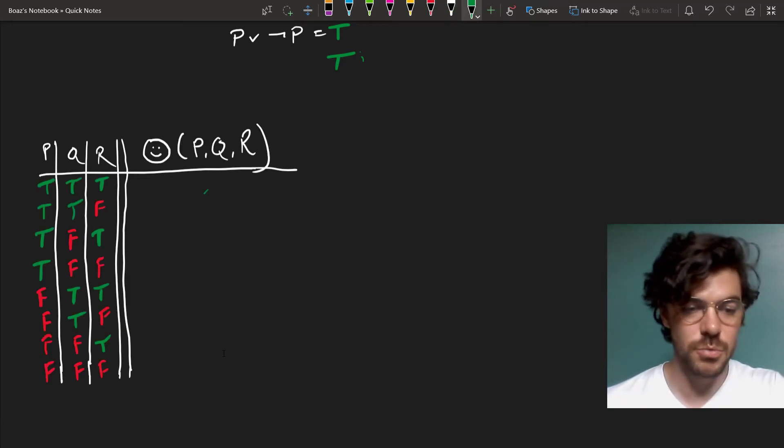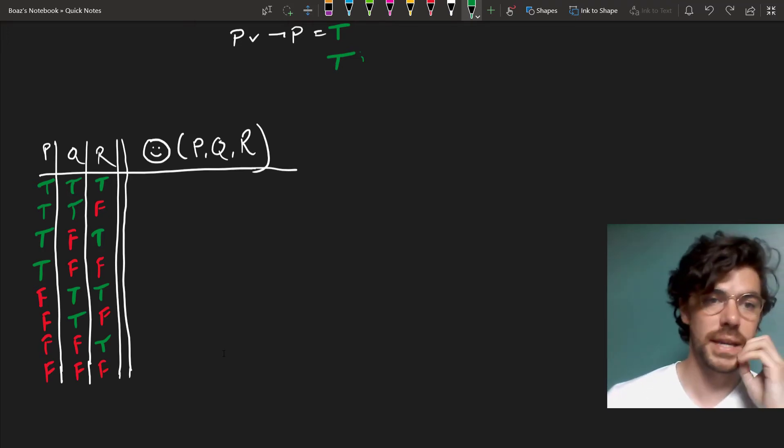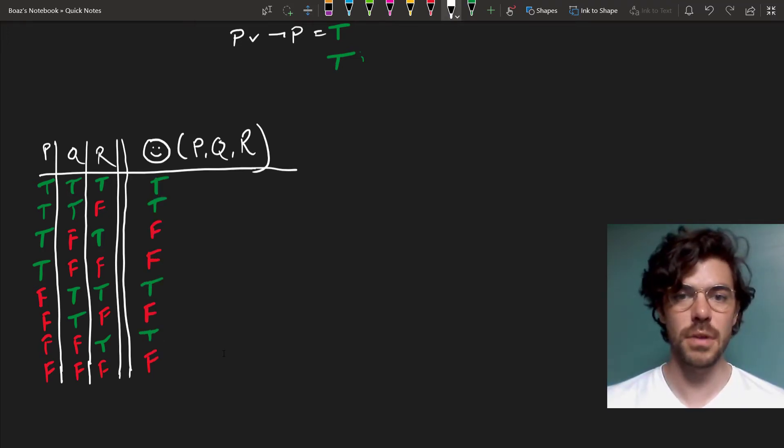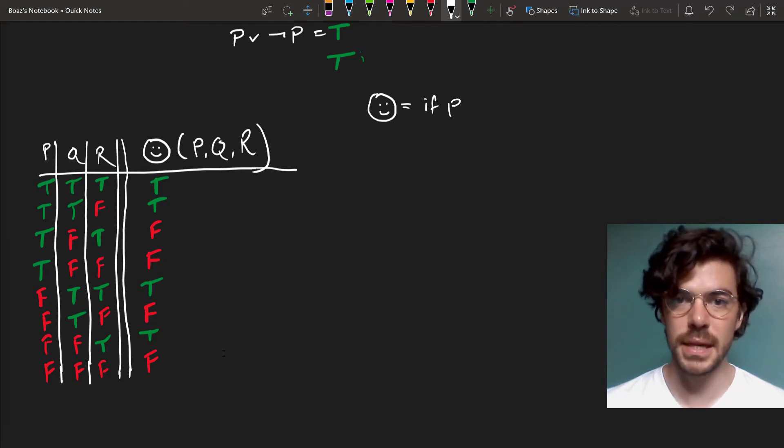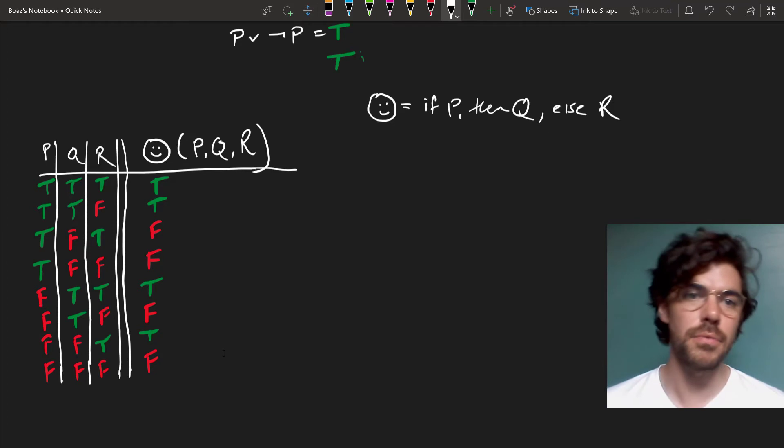Now we can pick any string of Ts and Fs we want to go under our main connective. If we pick this as our column under our main connective, then smiley face turns out to be roughly equivalent with if P then Q else R.